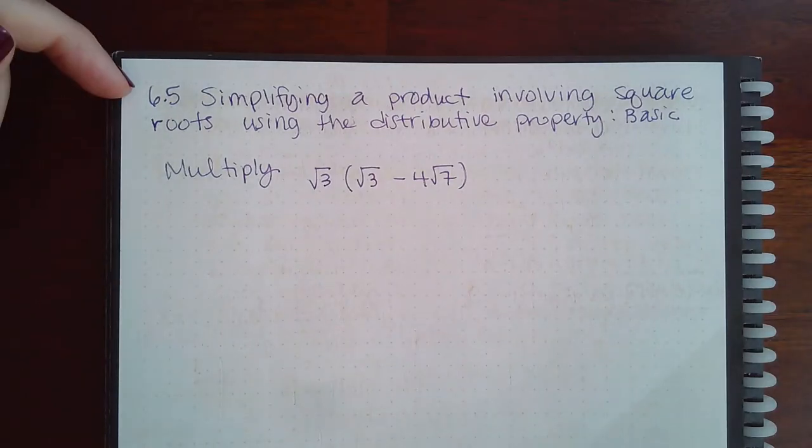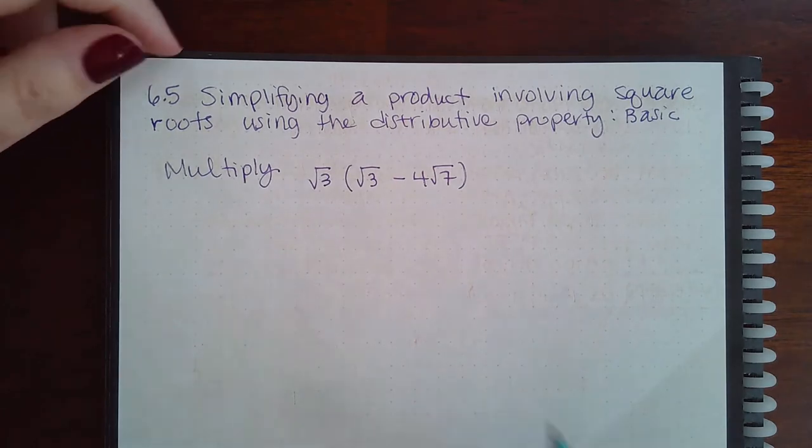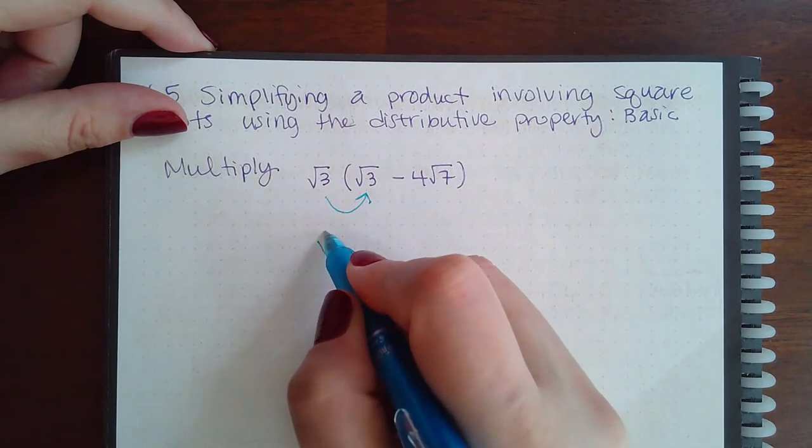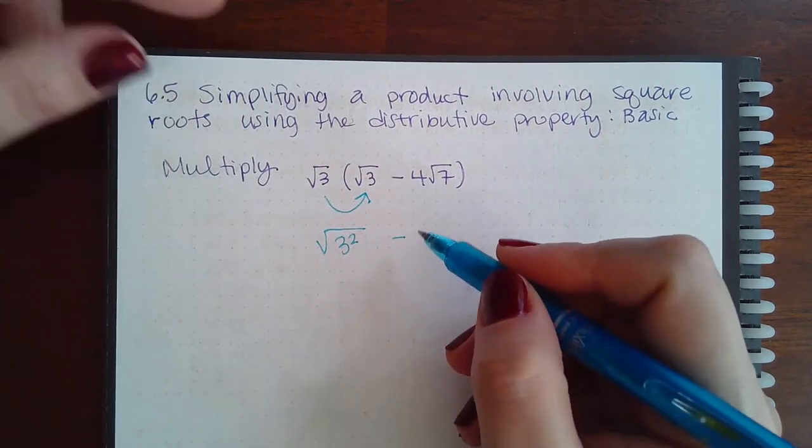Okay, here we have 6.5: simplifying a product involving square roots using the distributive property. So we're going to multiply these two together. We end up getting the square root of 3 squared, or the square root of 9.